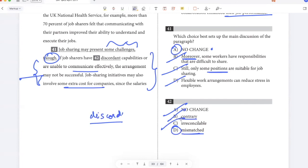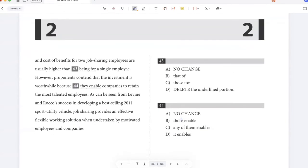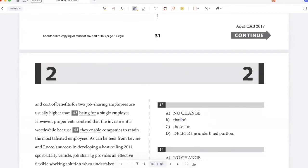Job sharing initiatives may also involve some extra cost for companies since the salaries and cost of benefits for two job sharing employees are usually higher than being for a single employee. Okay, so I'm talking about salaries and cost of benefits. So I'm talking about plural, salaries and cost. So salaries and cost of benefits for two employees are higher than those for a single employee, right? Because those is the plural pronoun. So it will be required when we talk about salaries and cost of benefits. Being for is incorrect, it is not a pronoun, and that is a singular pronoun. So that's wrong. And you definitely need to keep this because you're comparing benefits with benefits.